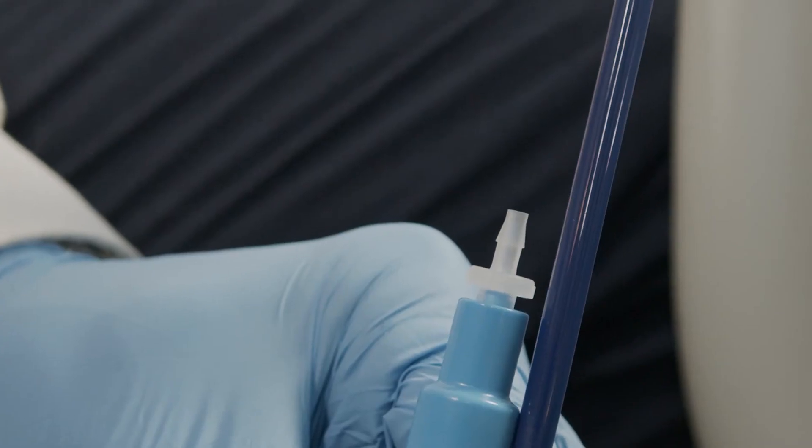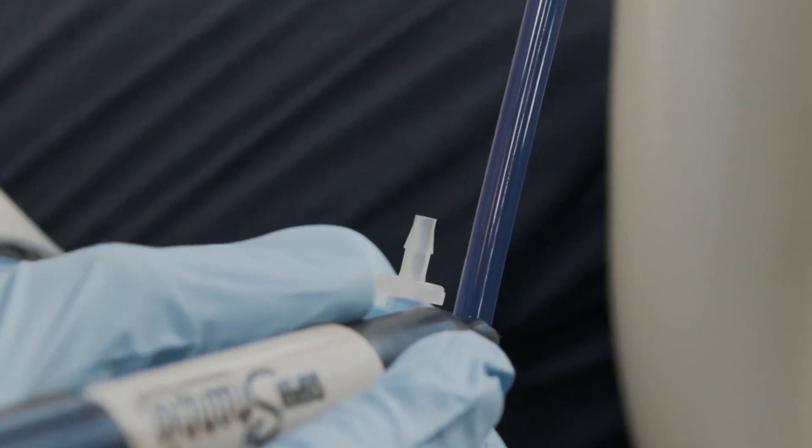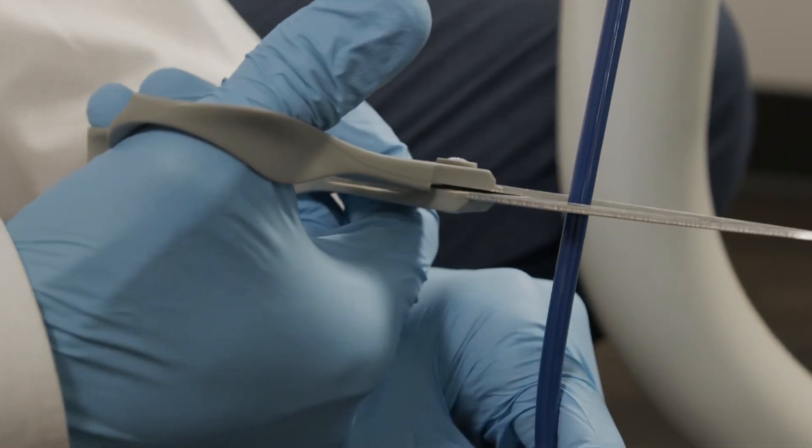Once you've got it, mark the uptake tube with a sharpie where the top of the Z3 straw will connect. Then, cut the uptake tube. That's it.